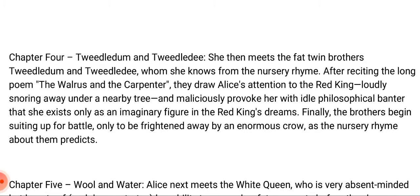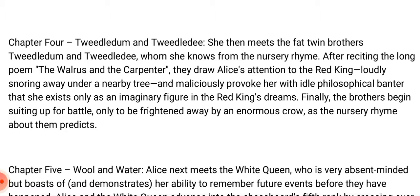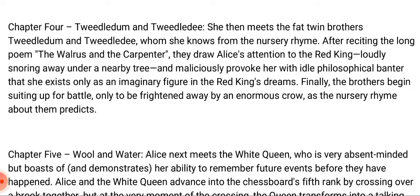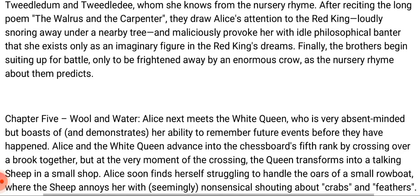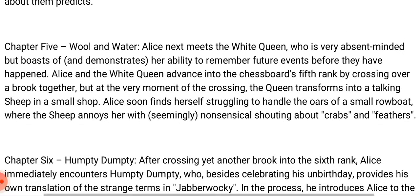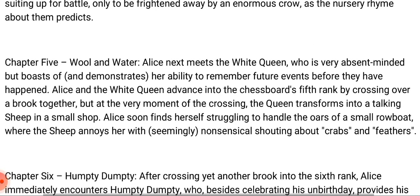Chapter five is titled 'Wool and Water.' Alice next meets the White Queen, who is very absent-minded but boasts of and demonstrates her ability to remember future events before they have happened. Alice and the White Queen advance into the chessboard's fifth rank by crossing over a brook together, but at the very moment of crossing the Queen transforms into a talking sheep in a small shop. Alice soon finds herself struggling to handle the oars of a small rowboat, where the sheep annoys her with seemingly nonsensical shouting about crabs and feelers.